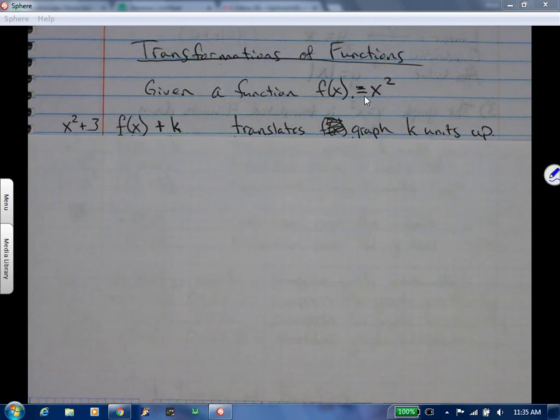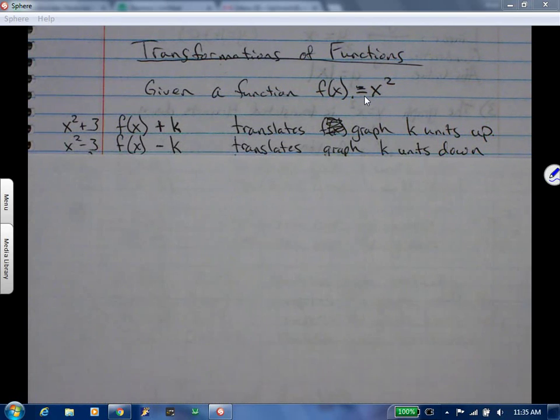So after we add k, then we can subtract k. That'd be like x squared minus 3. So f of x is a function minus k, and in case k is 3, that's going to be translating the graph k units down. So those are kind of the terminology that when they ask you to describe what's happening, instead of saying it goes down, you say it translates the graph three units down or four units down.